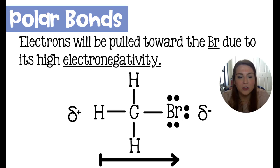Polar really just means having poles like a positive and a negative end. In this molecule, electrons are being drawn towards bromine because bromine has the highest electronegativity.